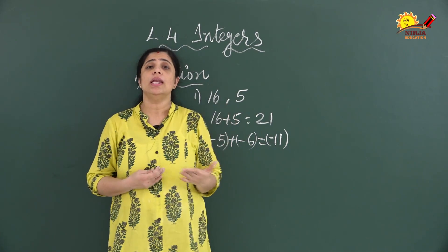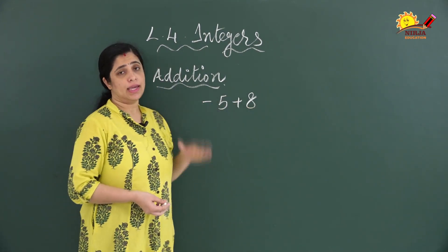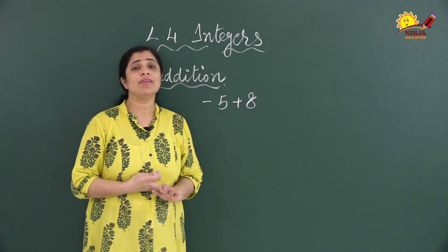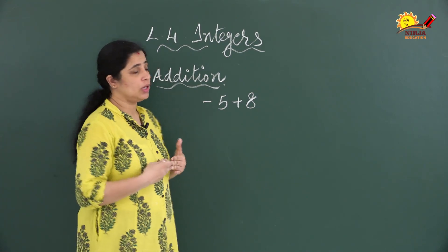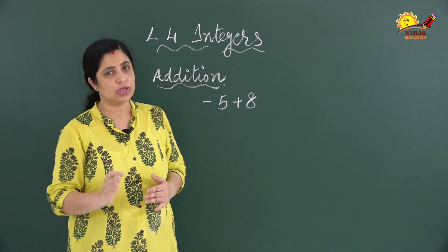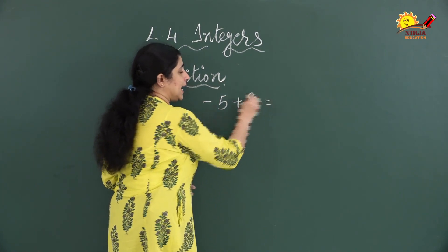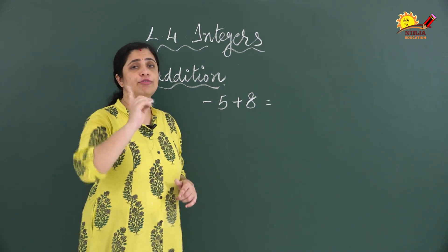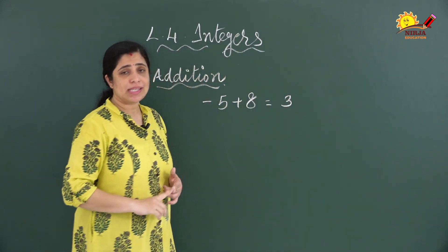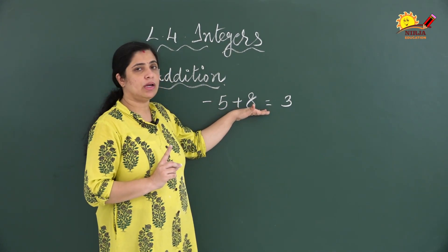The third condition is that one number is positive and the other is negative. For example: minus 5 plus 8. The first number is negative and the second is positive. In this condition you follow a rule: instead of addition, you do subtraction. You always subtract the smaller number from the bigger number. Here the bigger number is 8 and the smaller is 5, so subtract 5 from 8 to get 3. Now for the sign, you keep the sign of the bigger number.